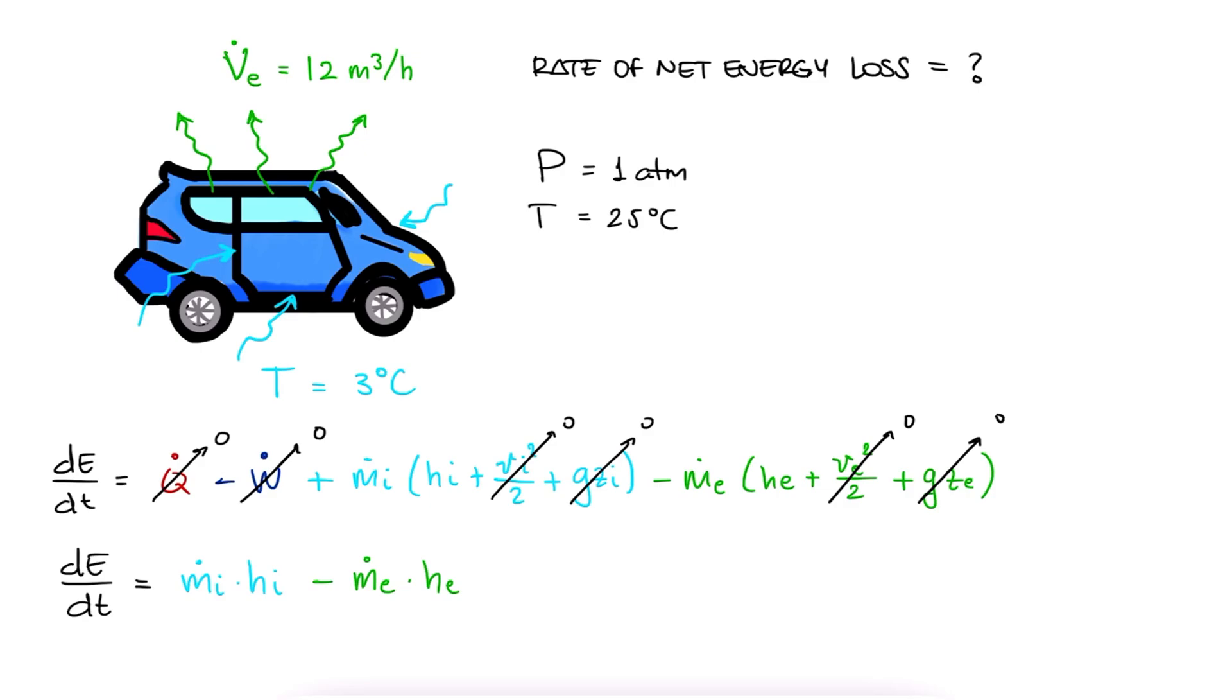And from mass conservation, we know that mass rate in is equal to mass rate out. This means that we have to find the mass flow rate and the two specific enthalpies, or since air around room temperature has a specific heat CP that doesn't vary much, we can write this as m dot times CP times the change in temperature.